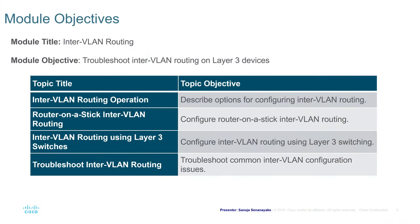In this lecture, we will learn about how we can troubleshoot inter-VLAN routing on layer 3 devices. We will cover inter-VLAN routing operation, router on a stick, inter-VLAN routing using layer 3 switches, and how we can troubleshoot inter-VLAN routing. Just like our previous module, this module also has some hands-on labs associated with our topics. We will be going through them as a lecture series for now and will post those labs onto my YouTube channel later.